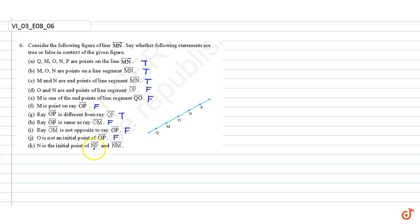N is the initial point of ray OP and ray NM. That is true. These are our answers.